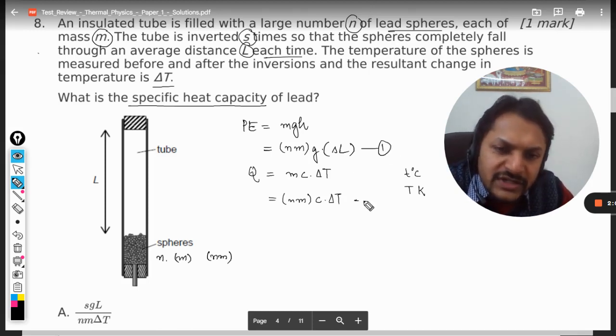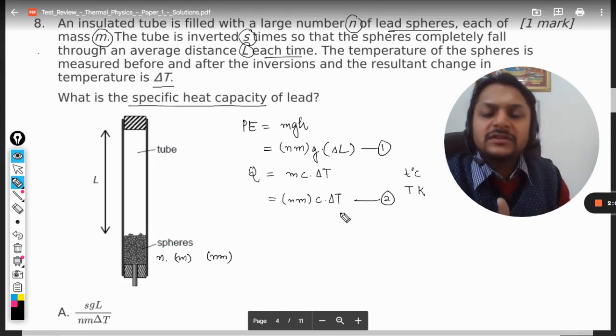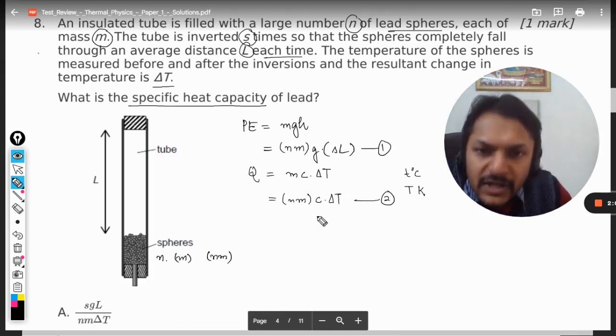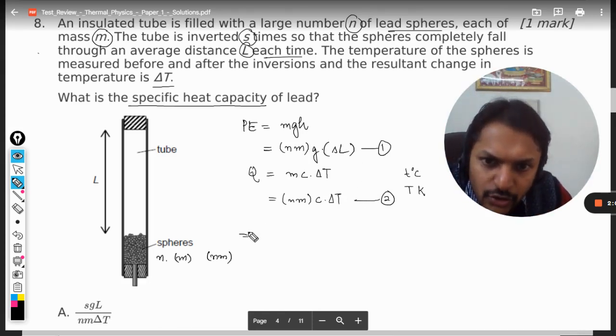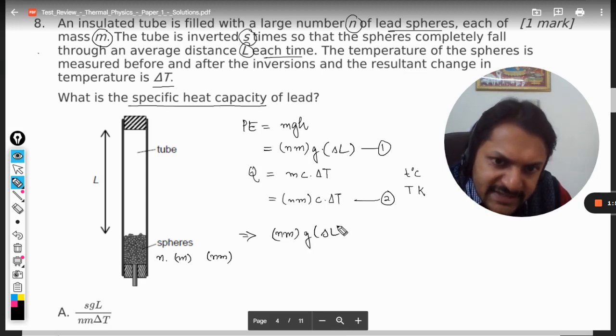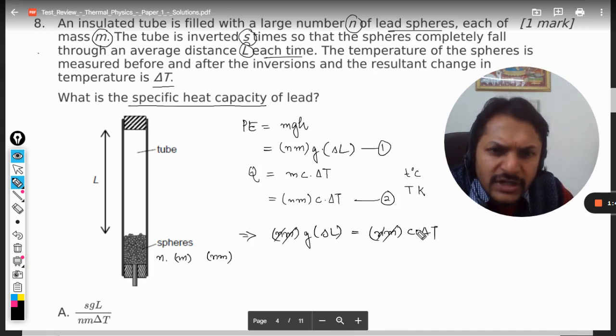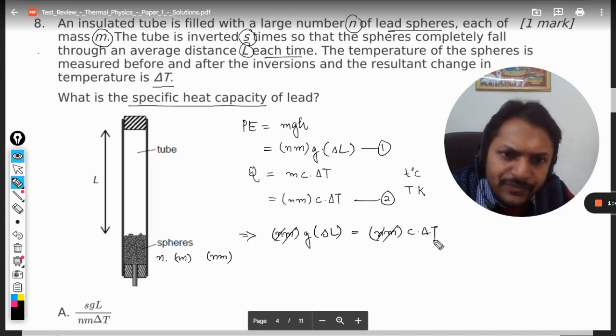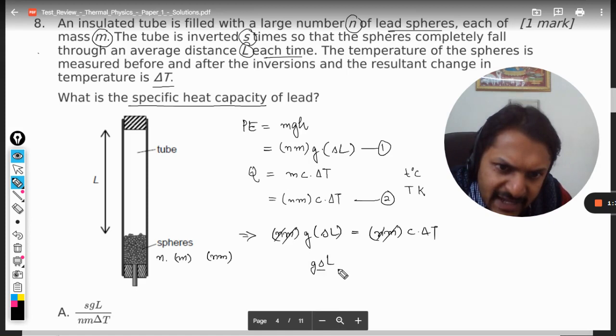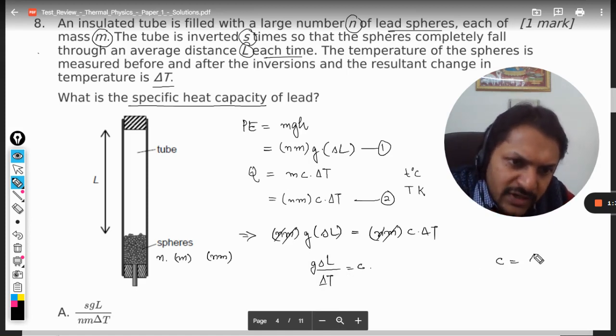Now these two equations have to be equated with each other - energy lost equals energy gained. So we have n into m g s l equals n into m c delta t. n into m gets cancelled out. We want to find c, that is specific heat capacity, so keeping c here, delta t is taken to the other side. It will be g s l divided by delta t equals c. So this is what we're getting.